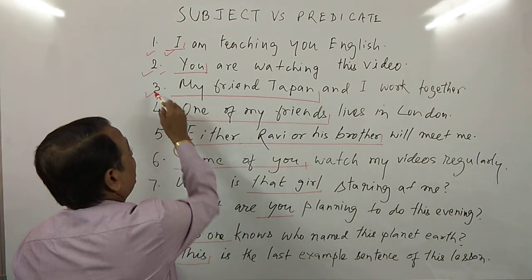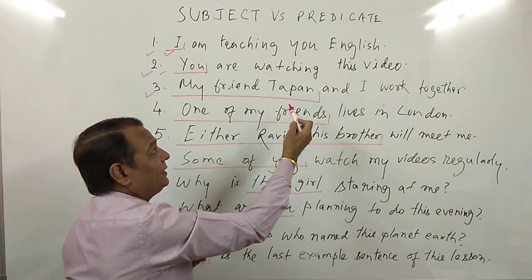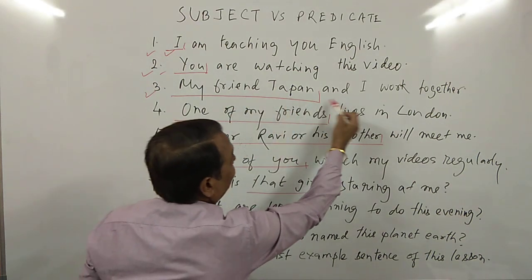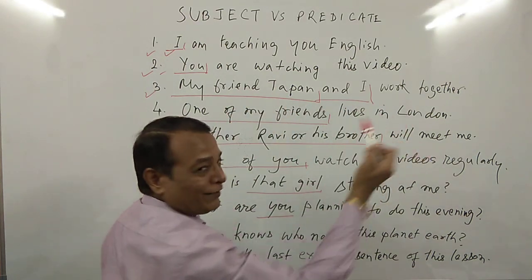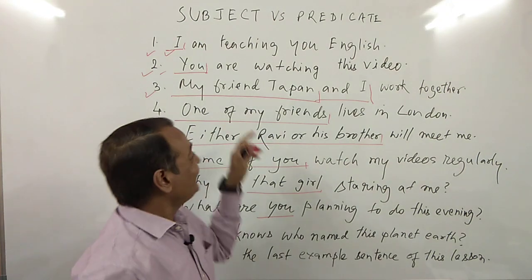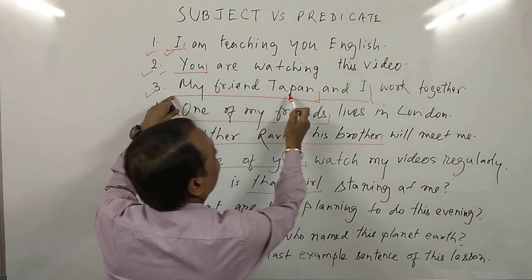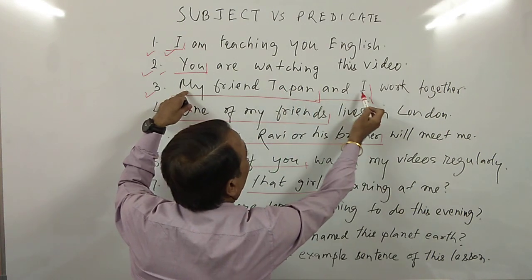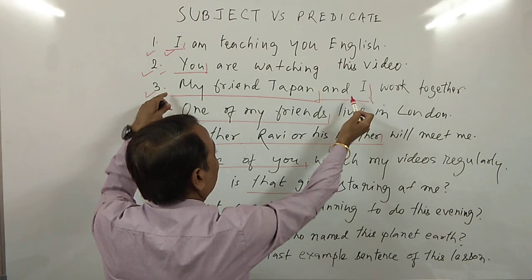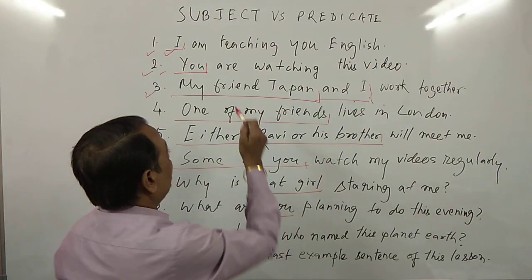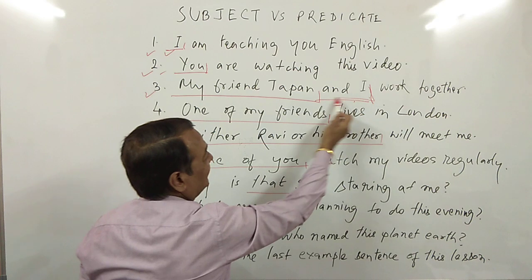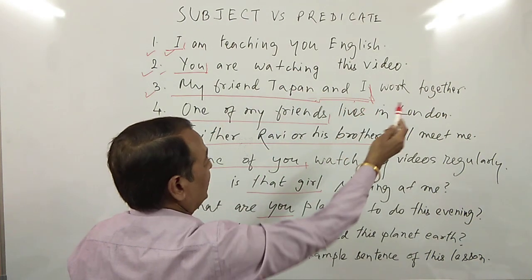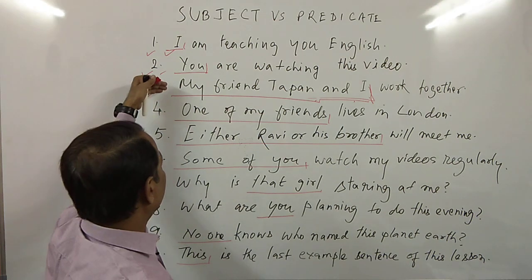Number three: 'My friend Tappan and I work together.' In this sentence, notice the size of the subject: 'My friend Tappan and I' — there are five words in this subject, because I am talking about my friend Tappan and myself. That's why this much is the subject.